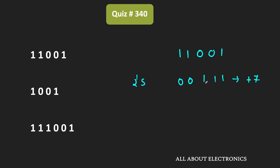For finding the 2's complement, I have copied all the bits until the first 1 is encountered. Then in the given number, all the 0's have been replaced by 1 and 1's have been replaced by 0. That means after the 2's complement, the number is equal to 00111, which corresponds to +7. That means the given number is the representation of -7 in 2's complement form.